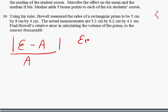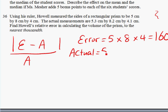The error measurement here will be the measurement that Howell measured, which is 5 cm by 8 cm by 4 cm for a rectangular prism. Multiply that all out and it should come out to be around 160. The actual measurement would be 5.3 times 8.2 times 4.1 which equates to 178.186.